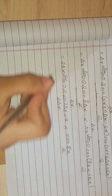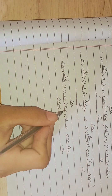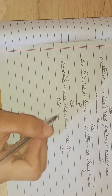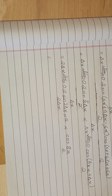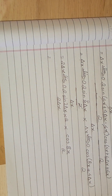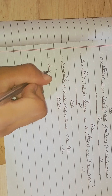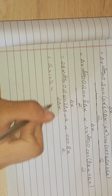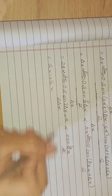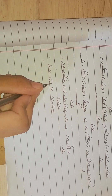We're almost there. Now sin(2δx) over 2δx — we use the standard formula sin(x)/x equals 1 as x tends to 0. So this equals 1. Therefore we get 2 times 1 times 2, which gives us 4. So the final answer is dy/dx equals 4 cos(4x).